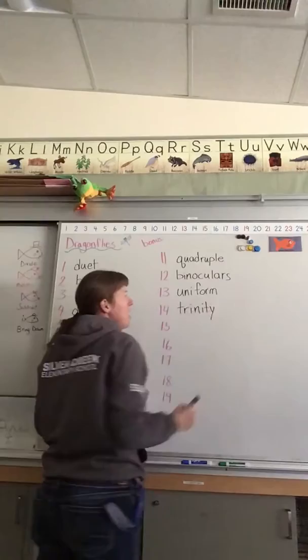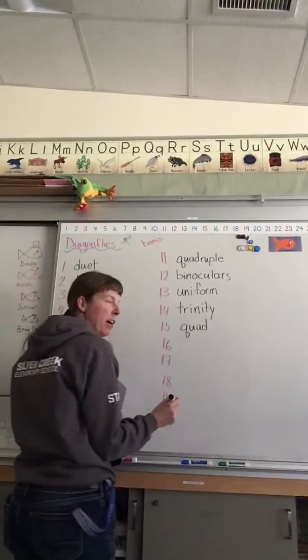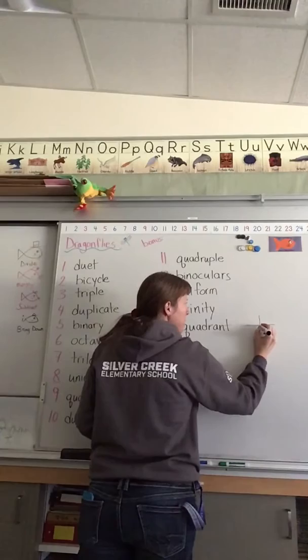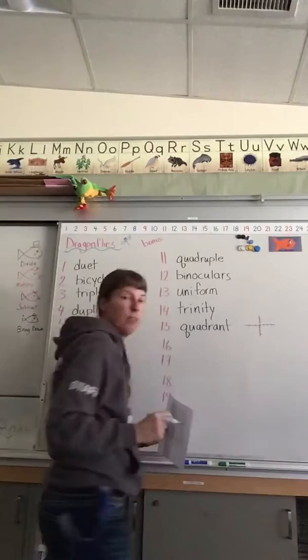Number fifteen, quadrant. It's got that 'quad' hiding in there. It's going to be four. When you're graphing, once you get up to high school, you're going to be making graphs where zero is in the middle. And then we'll have positive and negative numbers. We have not got there yet, but you'll notice there's four spots or quadrants.